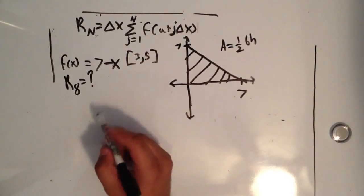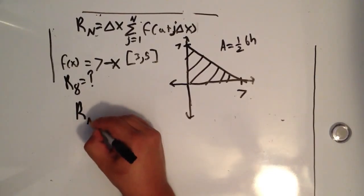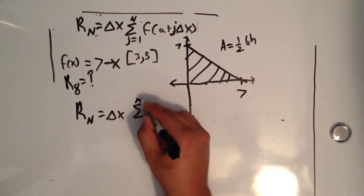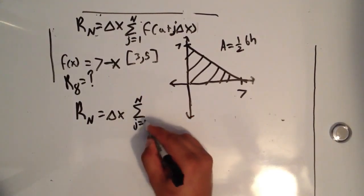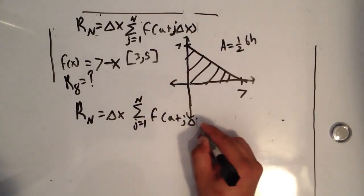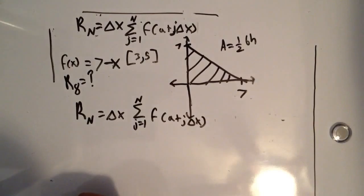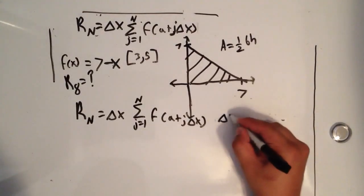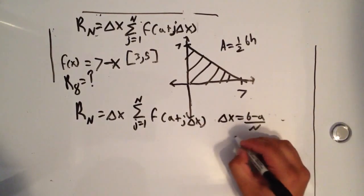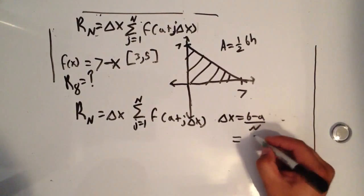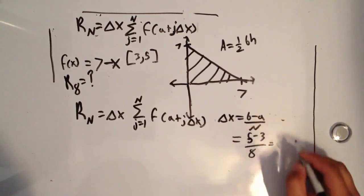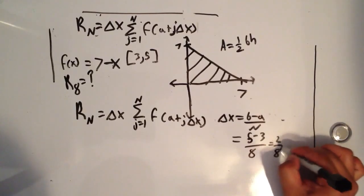The equation we're going to use is R(n) = Δx times the summation from j equals 1 to n of f(a + j·Δx). We know that Δx = (b − a)/n, so (5 − 3)/8 = 2/8 = 1/4.